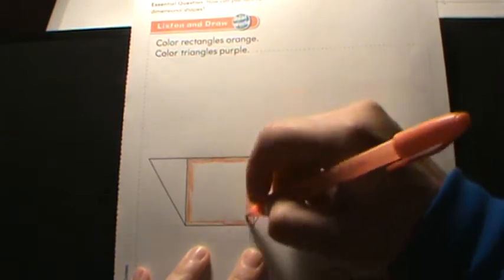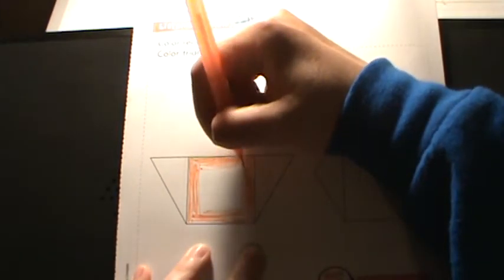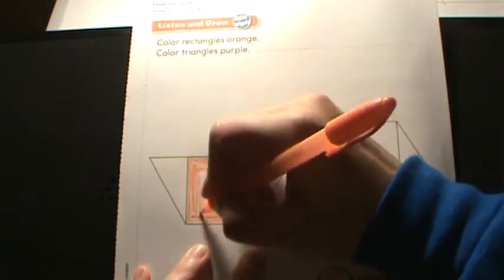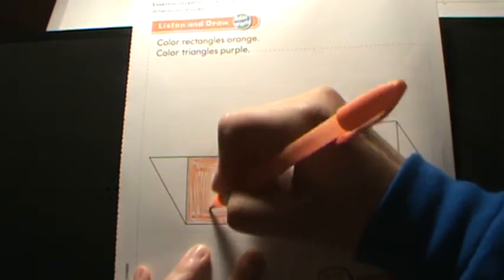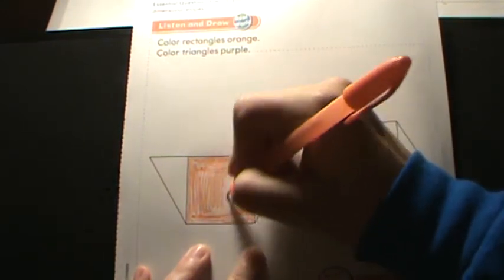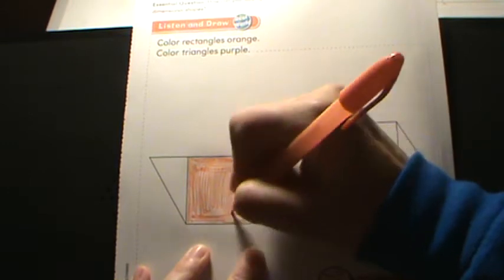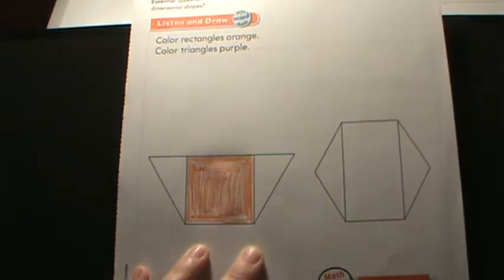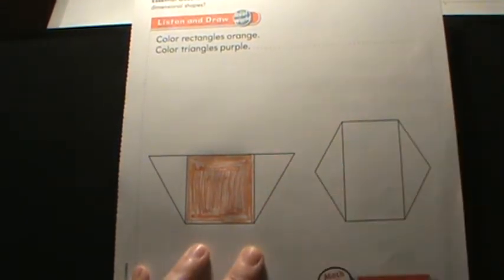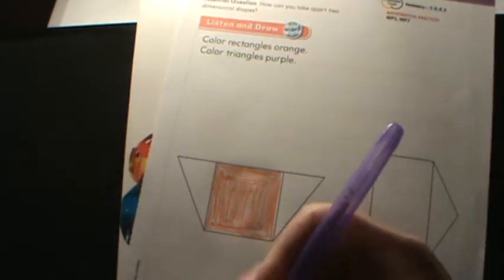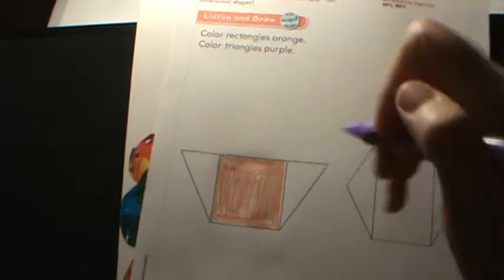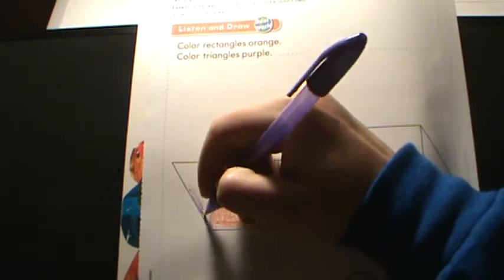So we're going to color the square and the rectangle both orange. I see this rectangle here in the middle. Pens are not the best idea for these activities.